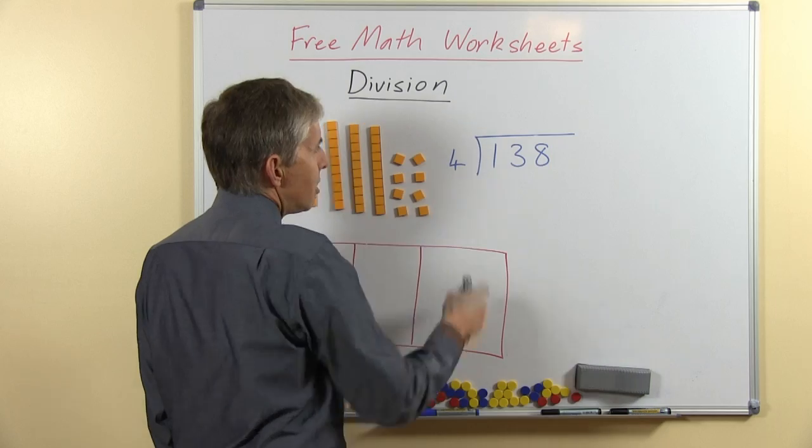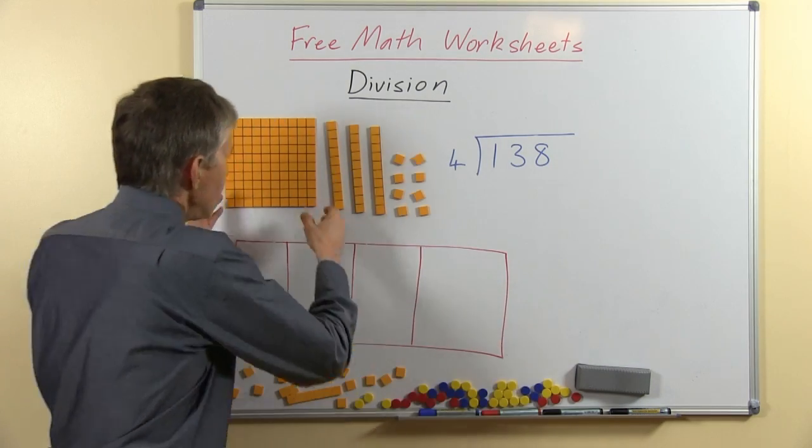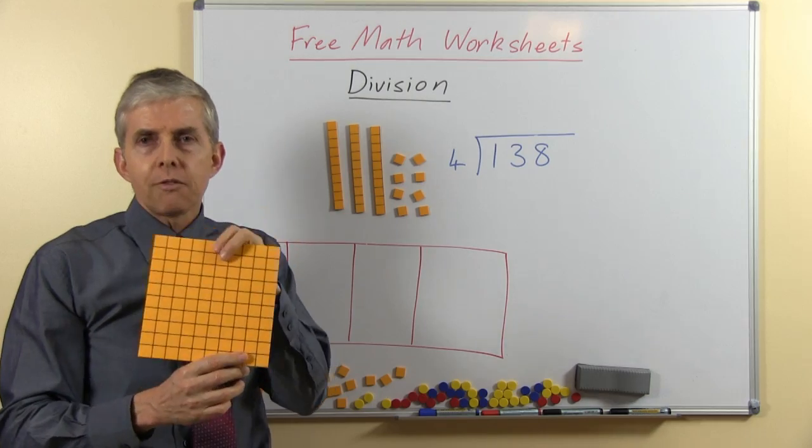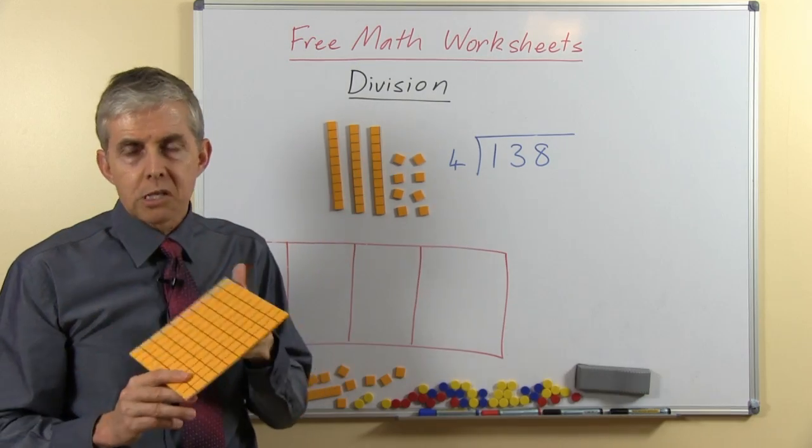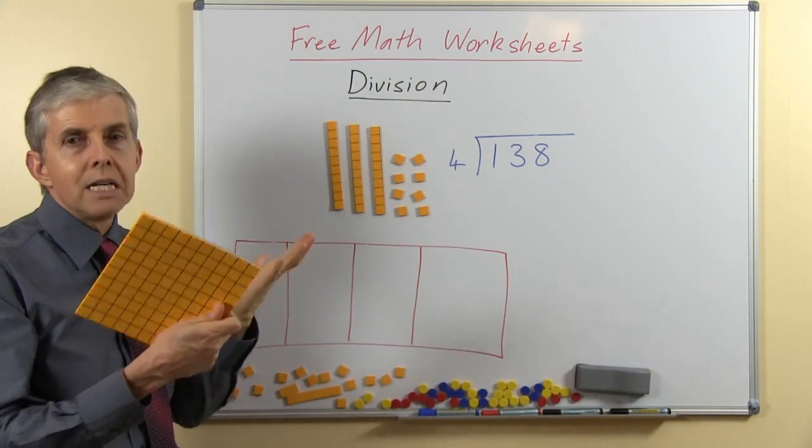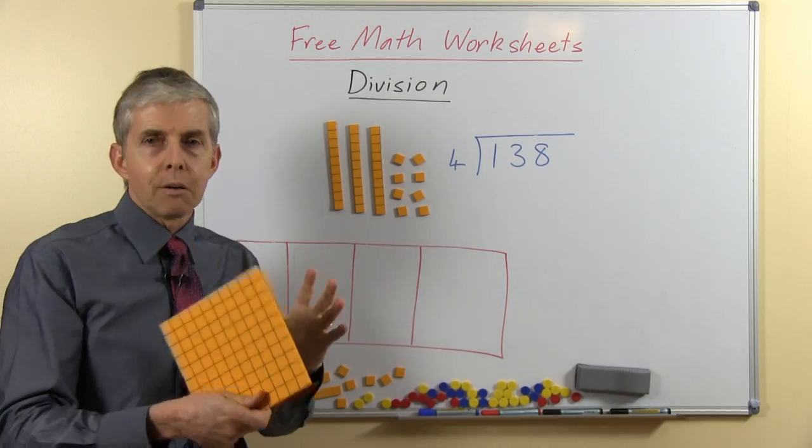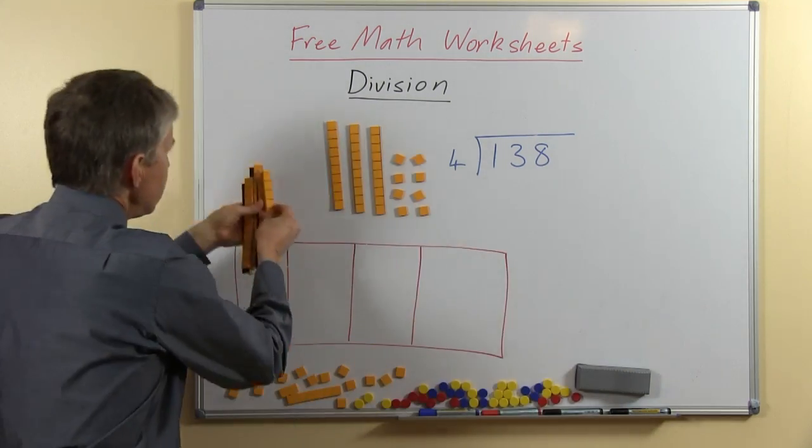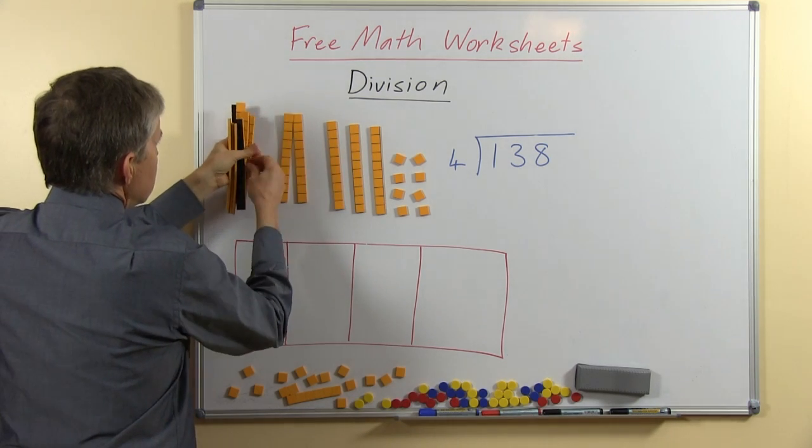So we have 13 to share among 4, now we should go back. Here's our 100, can we share this among 4 so that everybody gets 100? Obviously not, it's too big, we need to break it up, and we're going to break it up into 10, so let's do a swap, and we'll swap that 100 for 10 10s.